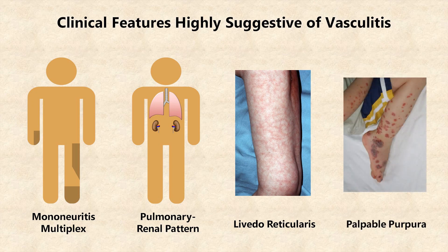Finally, is palpable purpura, which is the development of numerous raised, non-blanching, purplish lesions on the skin, which are usually most prominent in the lower legs, ankles, and feet, as shown here.